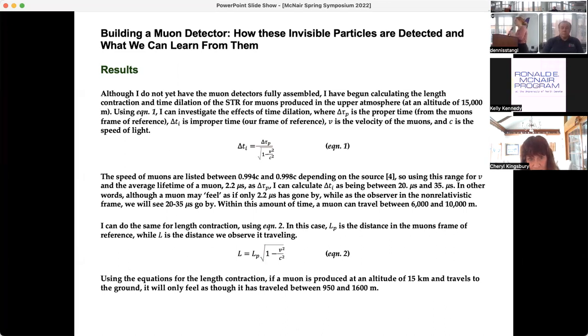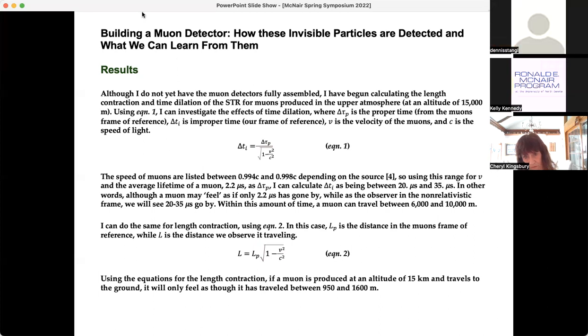I can do the same with that second equation up there, which is for the length contraction. L sub p is the proper length, the length that the muon feels that it's traveling, while l is just the improper length or the length that we're observing it to travel. For example, if we observe it being produced at an altitude of 15 kilometers and then traveling down to the ground, the muon itself, since it's traveling at relativistic speeds, it's traveling so fast, it'll only feel as if it's actually traveled between 950 and 1600 meters.